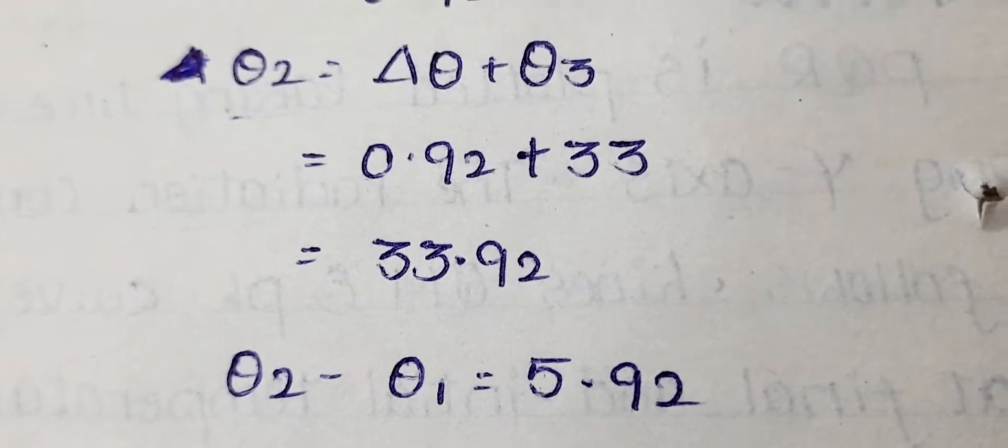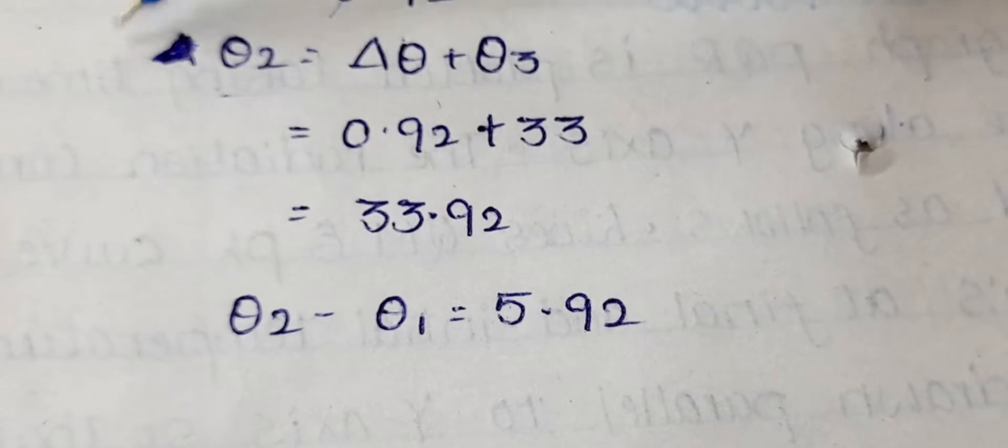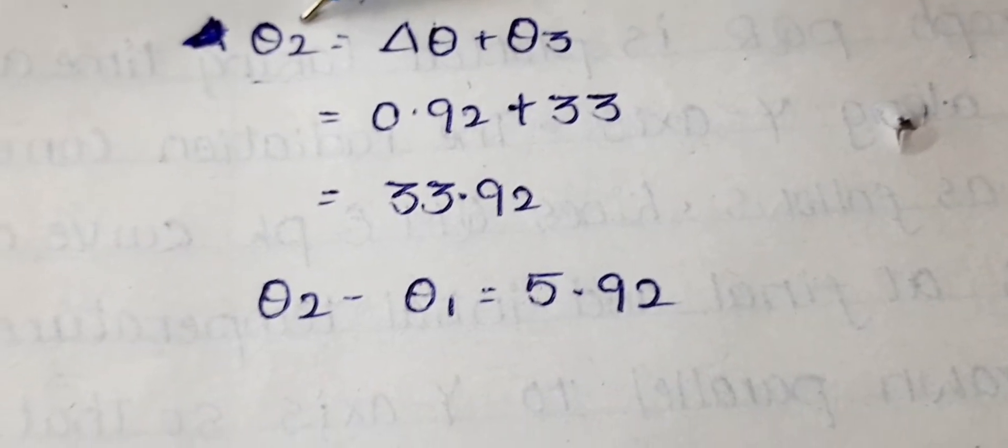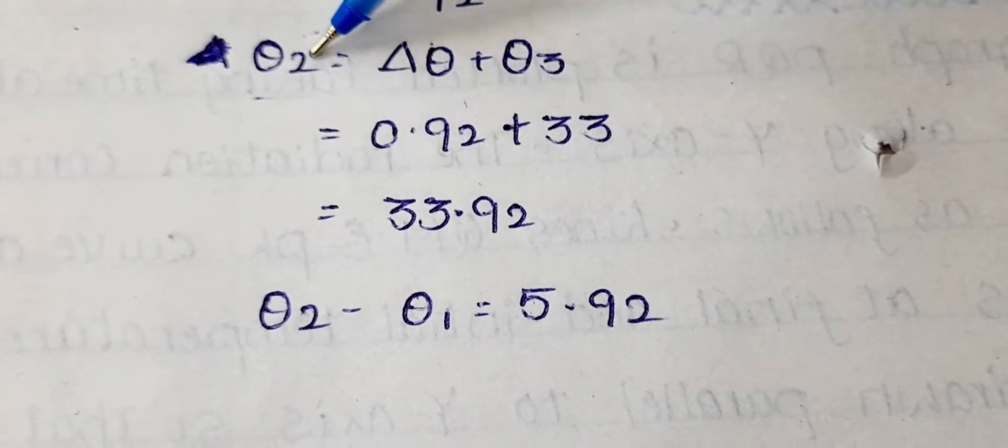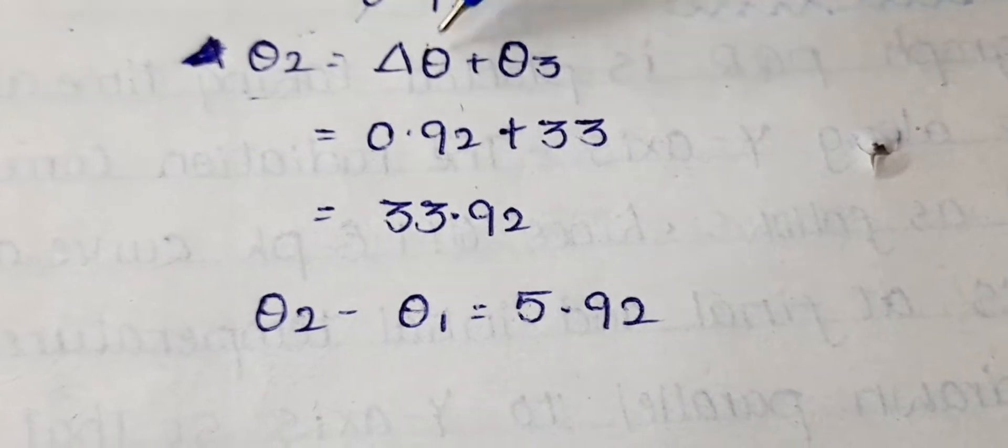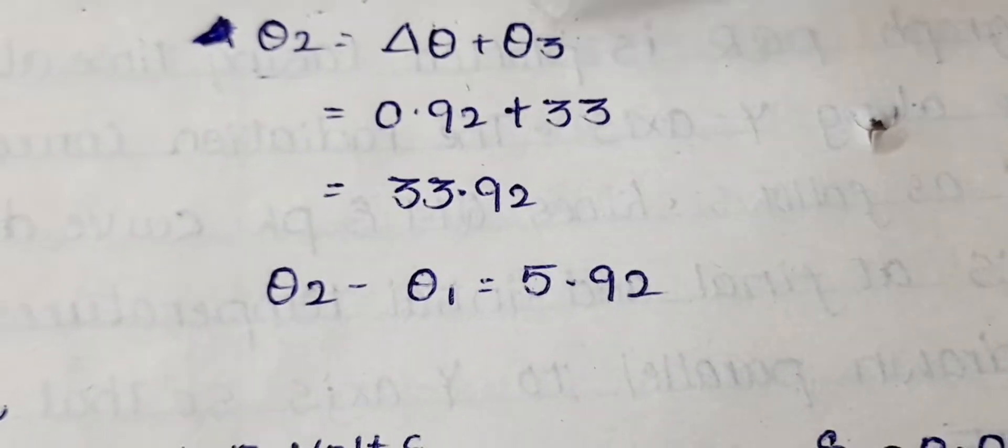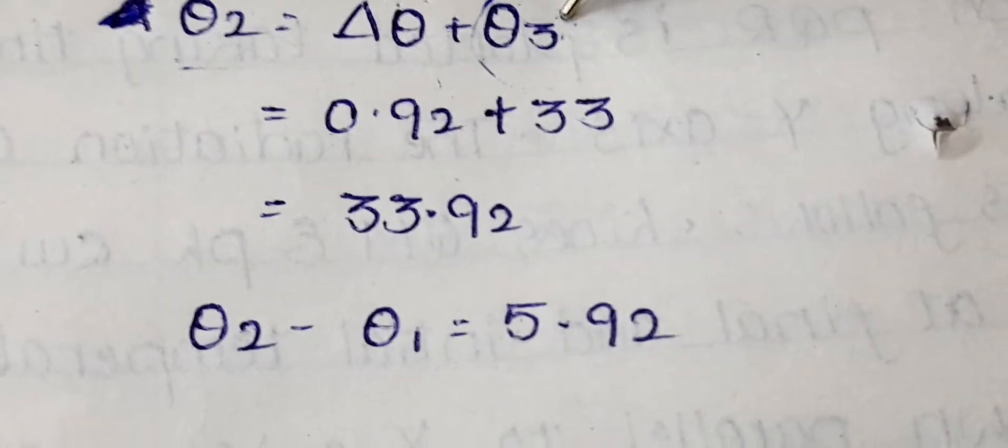We take the delta theta value from the graph to find the theta 2 value. Theta 2 value found with the help of delta theta and theta 3. Theta 3 will be the highest temperature in the graph.